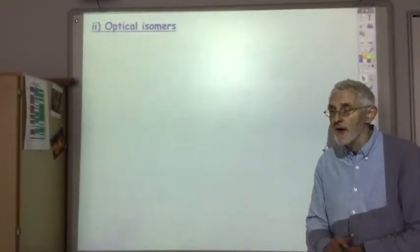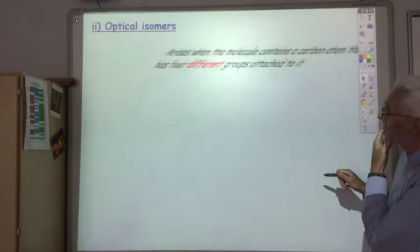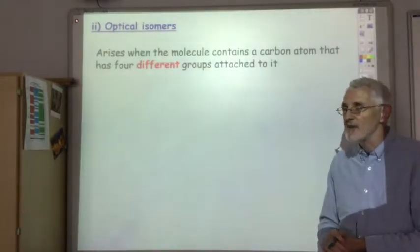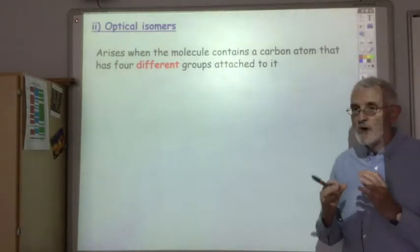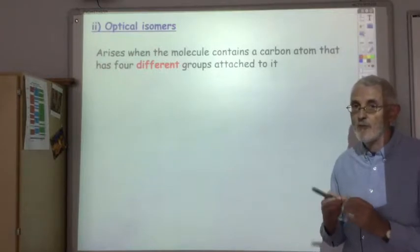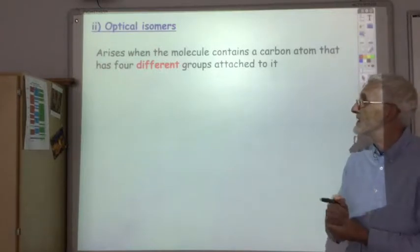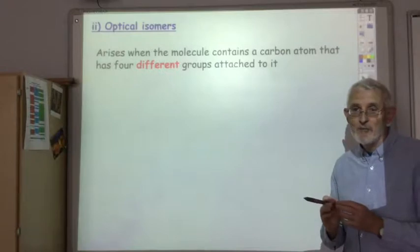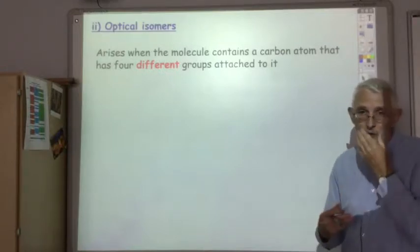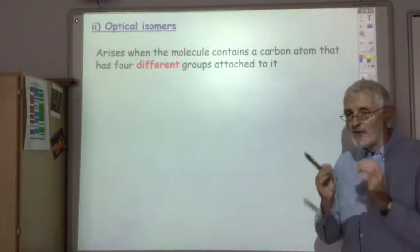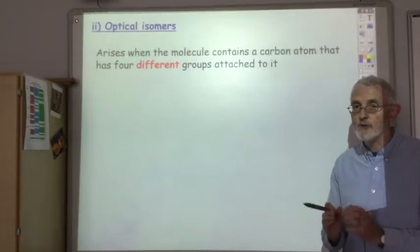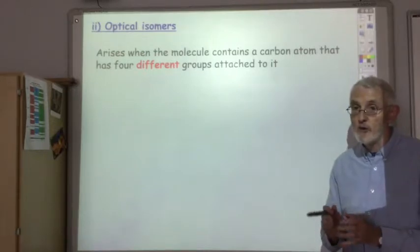Let's consider optical isomers. Optical isomers will arise when somewhere in the molecule you've got a carbon atom which is attached to four different groups. A different group could be a CH3, a COOH, a Cl, an H. So if you have one carbon atom in your molecule which is attached to four different groups, your molecule will be chiral.